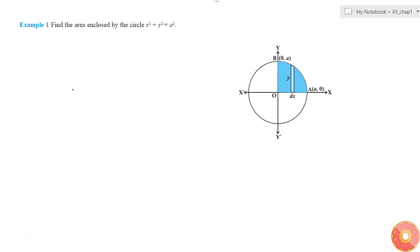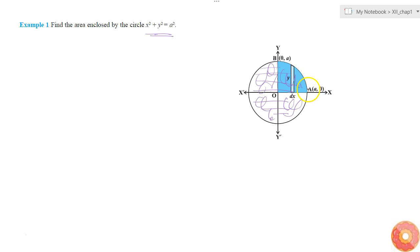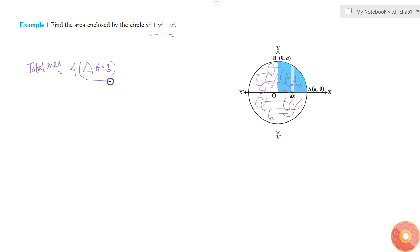In this question we are asked to find the area enclosed by the circle x² + y² = a². We can see this is a circle, and the area under it will be the whole region. The circle is symmetric so it contains four equal parts — this part, this part, this part, and this part — all equal in area. So instead of doing the whole integration, I will find the area of part AOB and then multiply by four to get the total area.